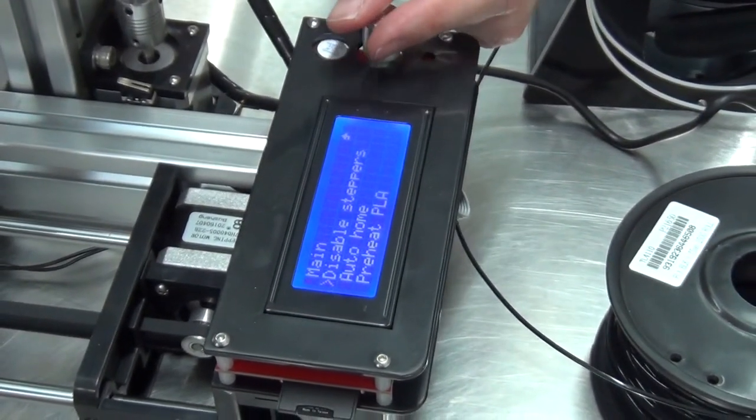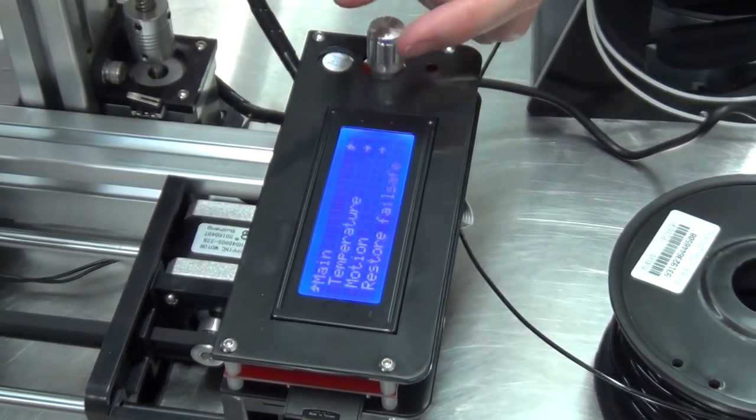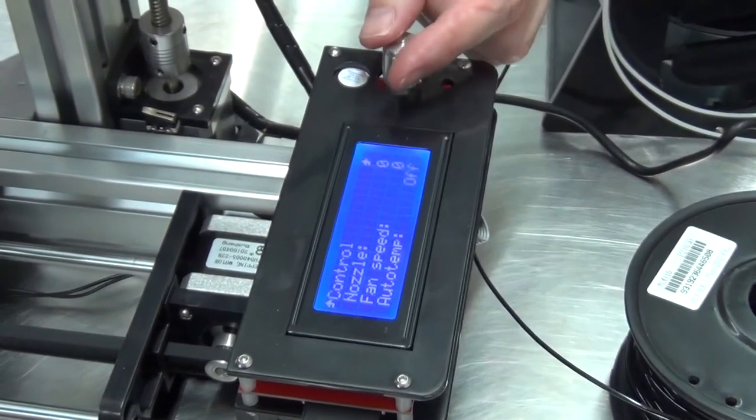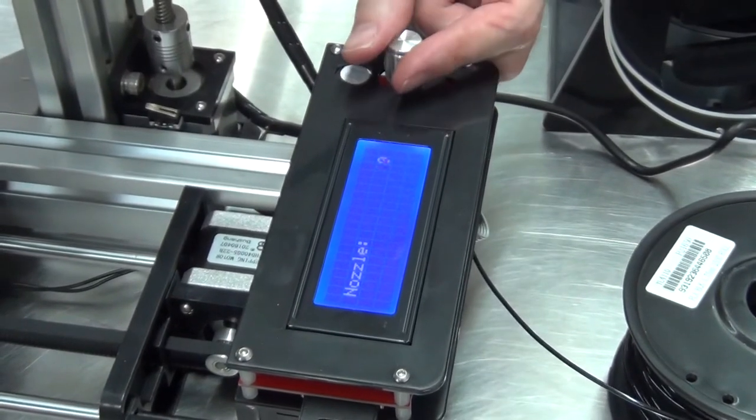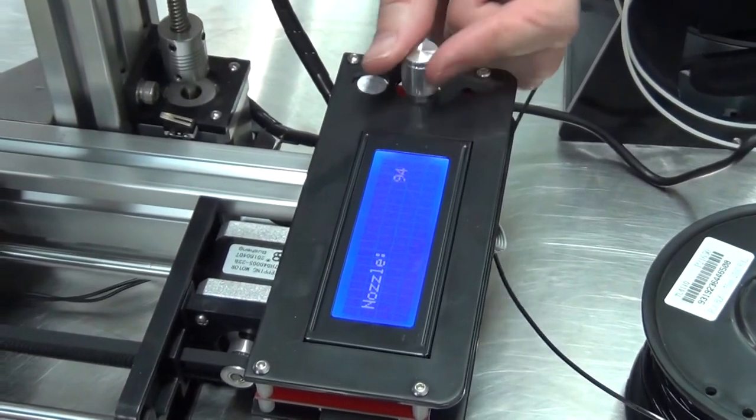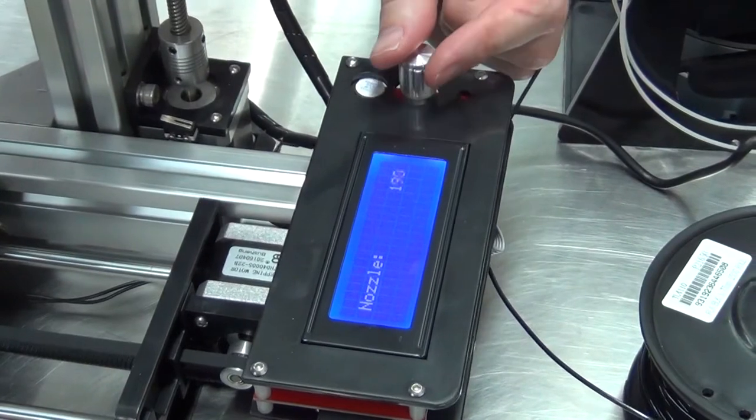The first thing to do is make sure the hot end is hot. So we just set it to the normal temperature for operating with PLA in this case and wait for that to heat up.